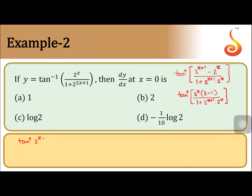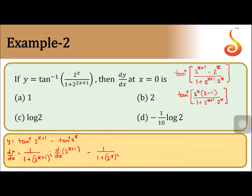Tan inverse 2 to the power x plus 1, minus tan inverse 2 to the power x, which is equal to y. So dy by dx is equal to 1 by 1 plus 2 to the power x plus 1 whole square, into d by dx of 2 to the power x plus 1, minus 1 by 1 plus 2 to the power x whole square, into d by dx of 2 to the power x. This gives us 1 by 1 plus 2 to the power x plus 1 whole square, into 2 to the power x plus 1 into log 2, minus 1 by 1 plus 2 to the power x whole square, into 2 to the power x log 2.